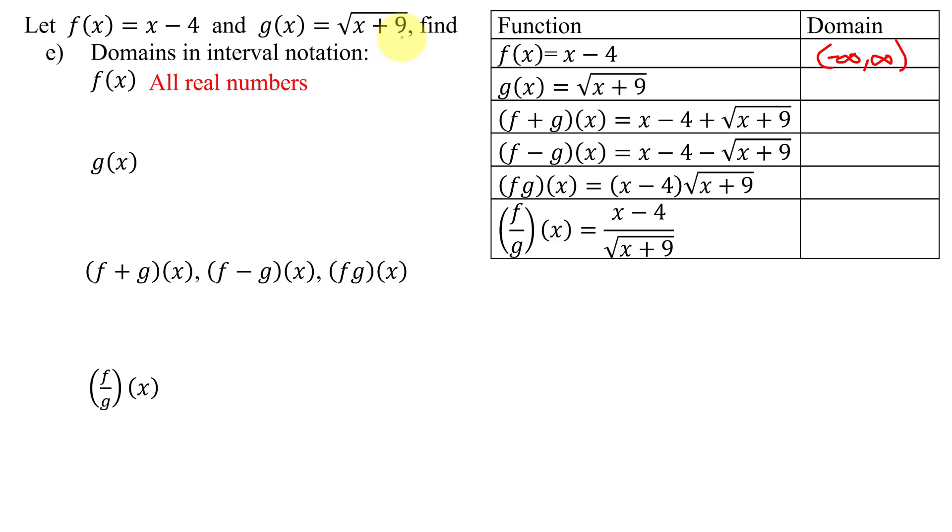Now g of x is not a polynomial. It has domain issues because we want to avoid the radicand of x plus 9 being negative. So to do that, we take the radicand x plus 9. And since we don't want it to be negative, we want it to be positive or 0. That means greater than or equal to 0. Subtracting 9 from both sides, I get x is greater than or equal to negative 9.